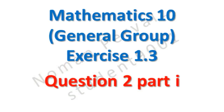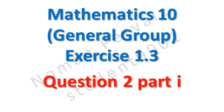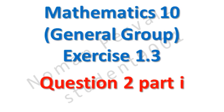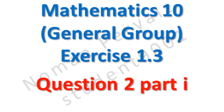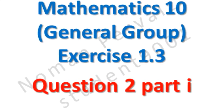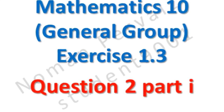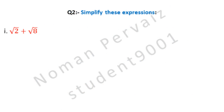We are going to solve part 1 of question number 2 of 10th class math, general group, exercise 1.3. Question 2 is: simplify these expressions. And part 1 is under root 2 plus under root 8. Let's see its solution.